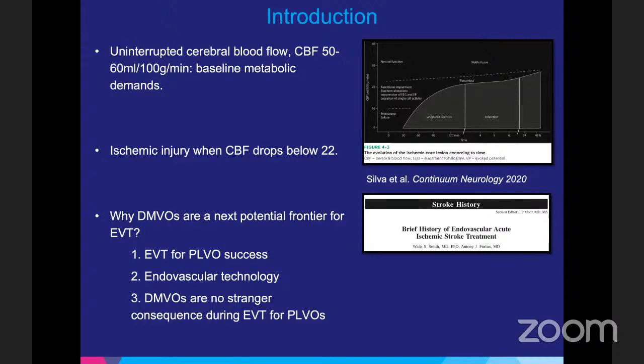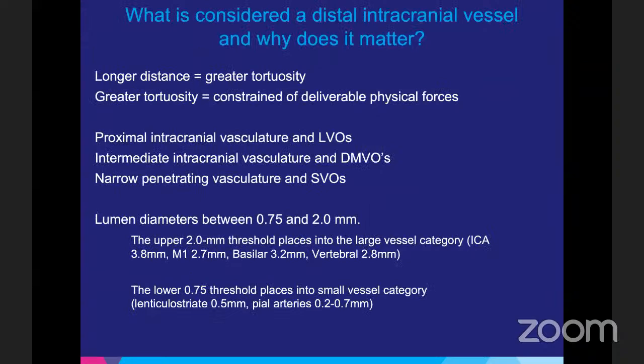It is just natural for us to now look more distally. For neurointerventionalists, about 25 to 30 percent of large vessel occlusion cases have a distal clot that migrates — sometimes they chase and retrieve it, sometimes they don't. The three main drivers for interest in distal vessels are: the high success of large vessel occlusion treatment, major endovascular technological advancements, and the fact that distal vessel occlusions are very common.